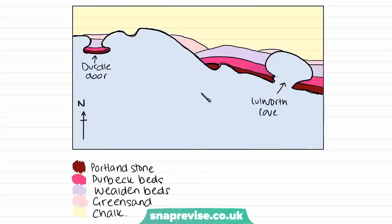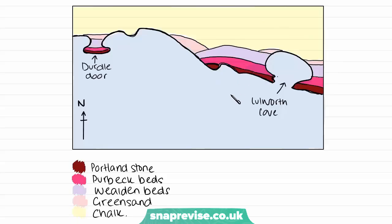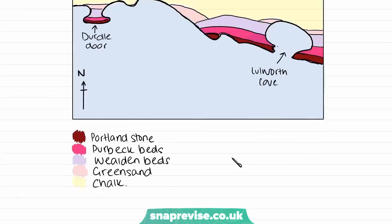In this coastal landscape, we have different types of rock present, and these really influence the formation of different landforms. Right on the edge of the coast, we have Portland stone. Further in, we have the Purbeck beds, then Wealden beds, greensand, and chalk. The different erosion rates of these different types of rock and stone will affect the rates of erosion and deposition in the areas.